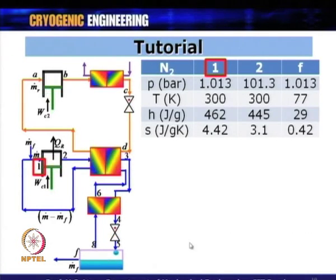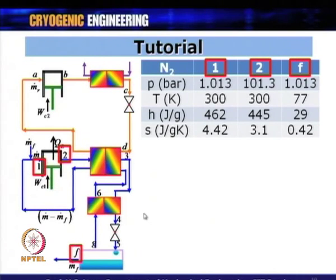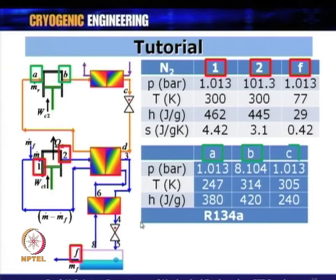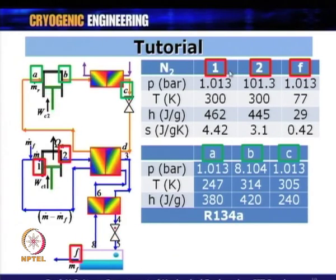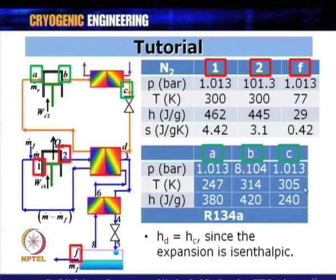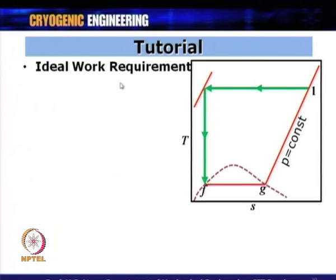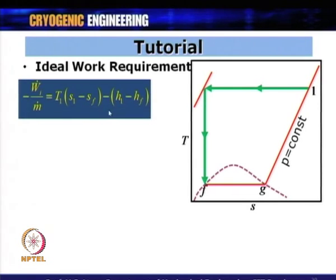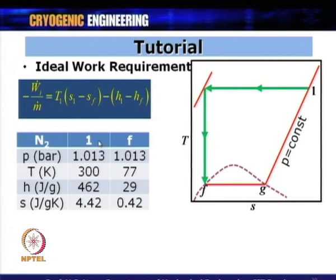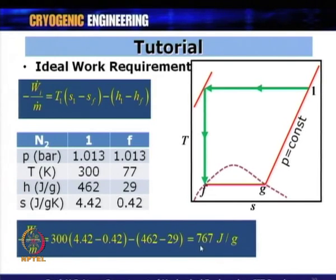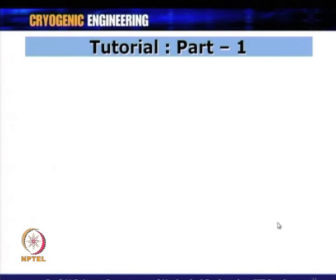The circuit shows points 1, 2, and F for nitrogen, and points A, B, and C for R134A. The HD = HC condition holds — enthalpy at point C equals enthalpy at point D. For the ideal work requirement, since all compressed gas is liquefied, using the standard formula with enthalpy values at points 1 and F gives an ideal work of 761 J/g, which is the standard value for nitrogen as working fluid.